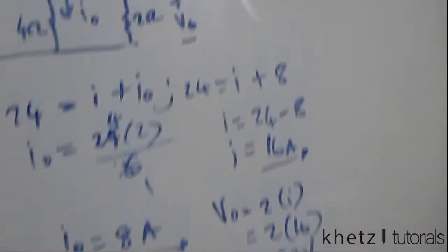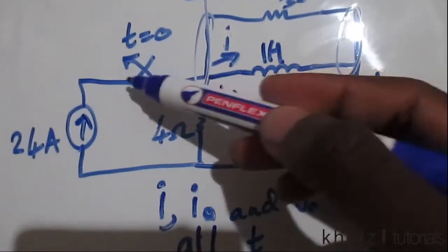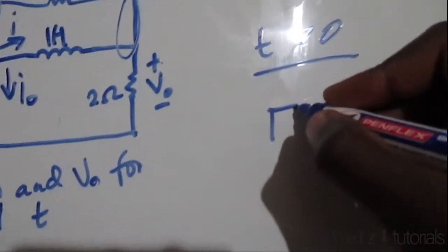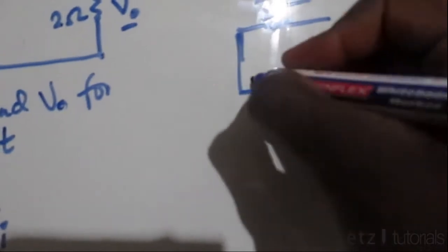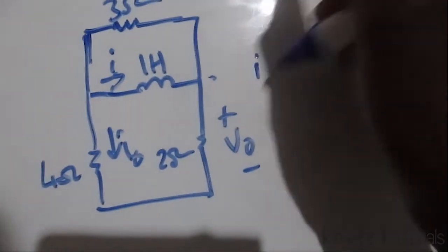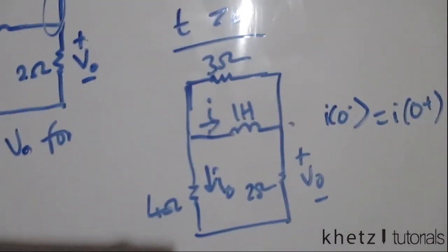Moving on to time greater than zero: the switching action occurs, so the current source is effectively removed from the circuit. We are left with the storage element. The inductor current cannot change abruptly, so the current i just before zero equals the current i just after zero. The initial value of i is 16 amperes.